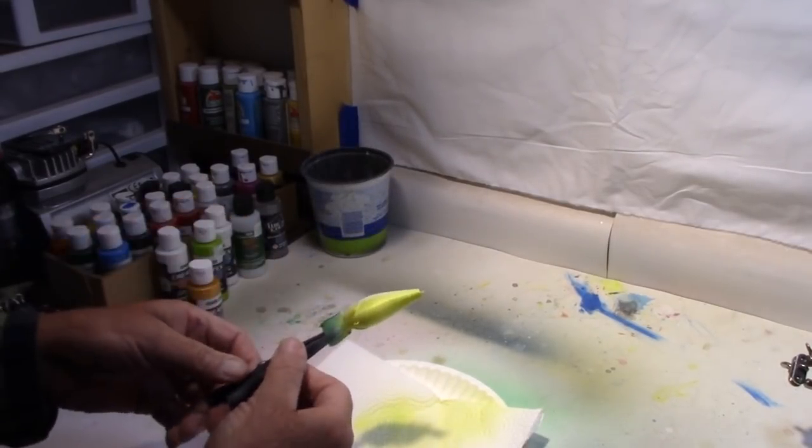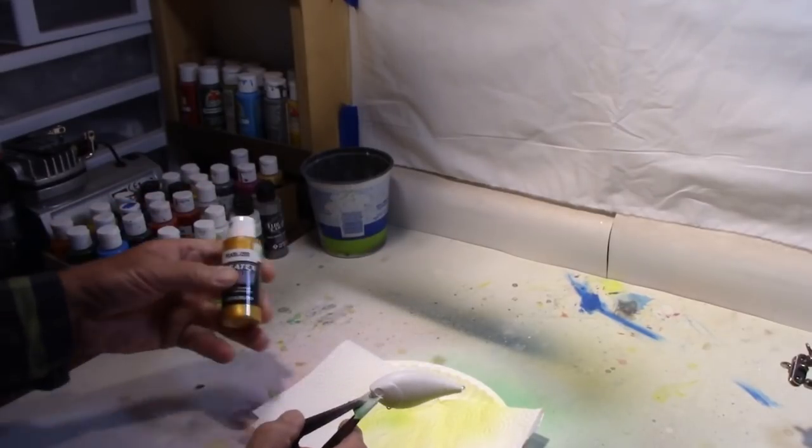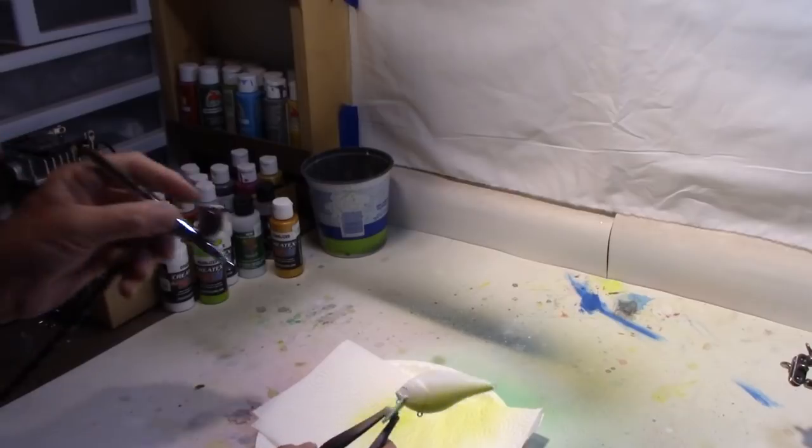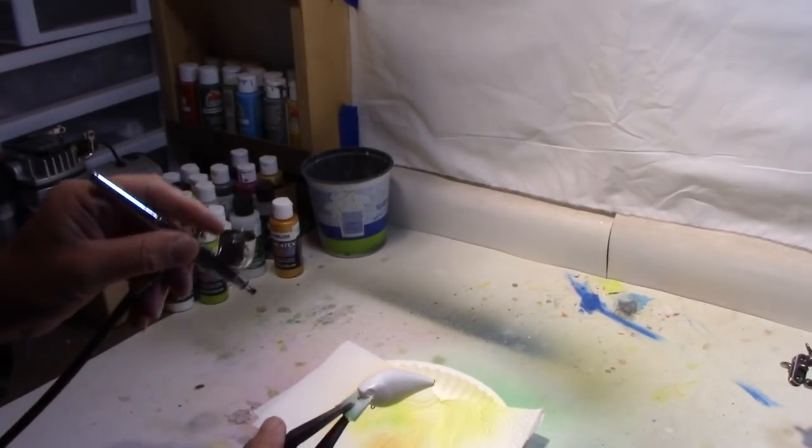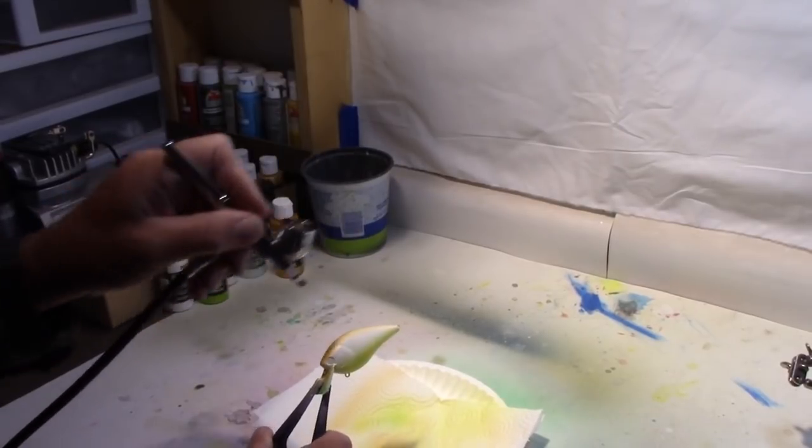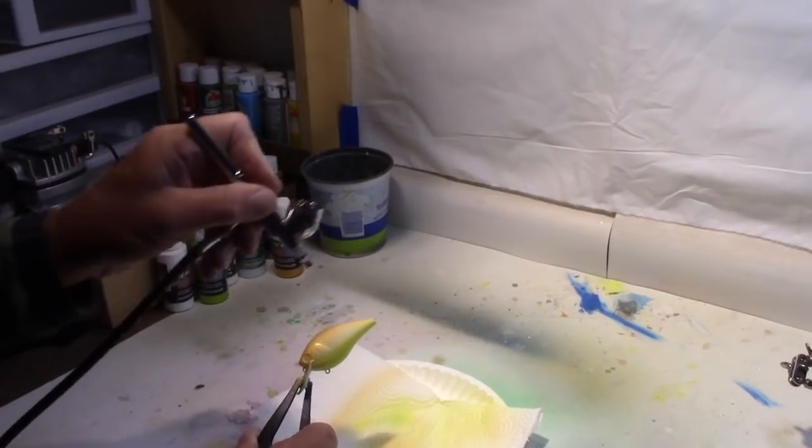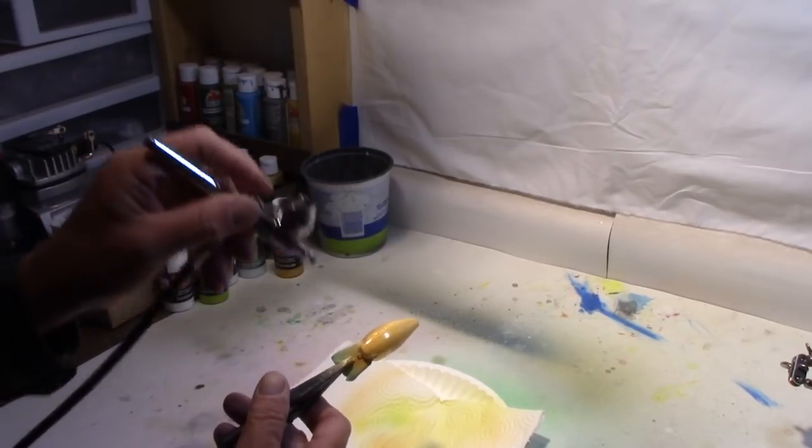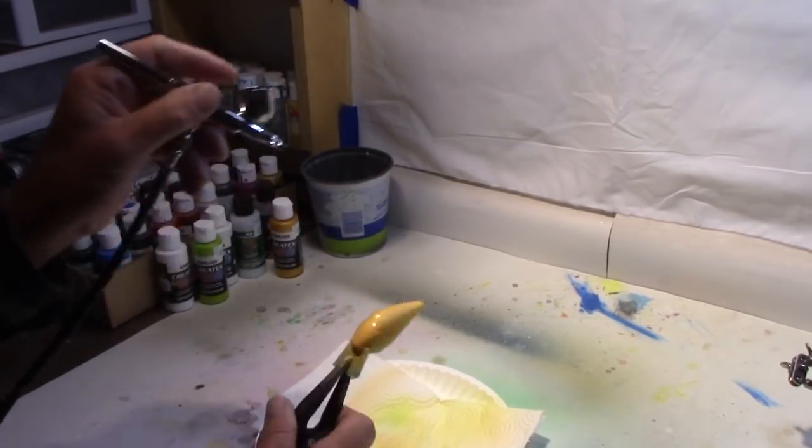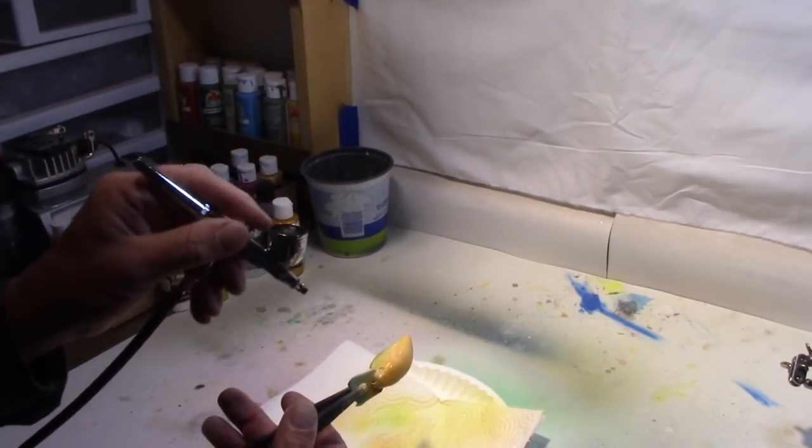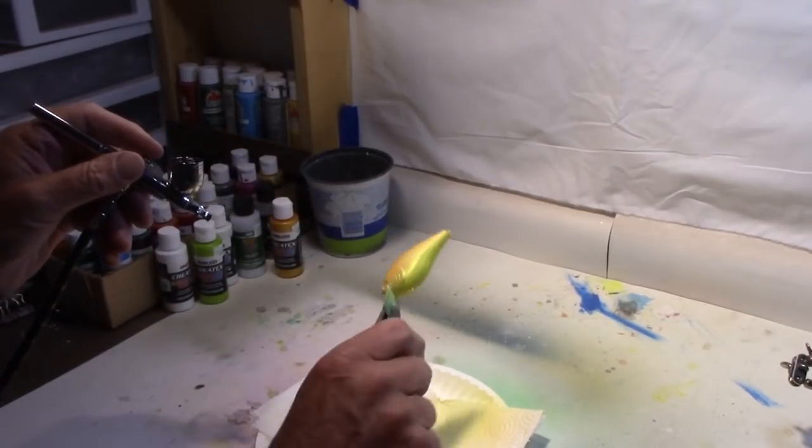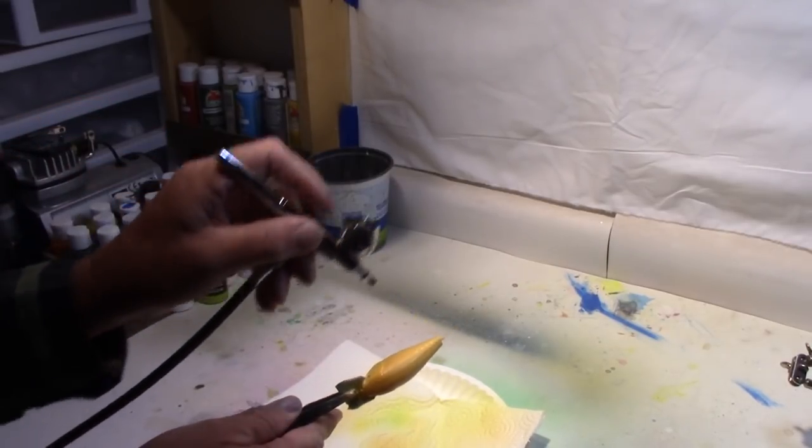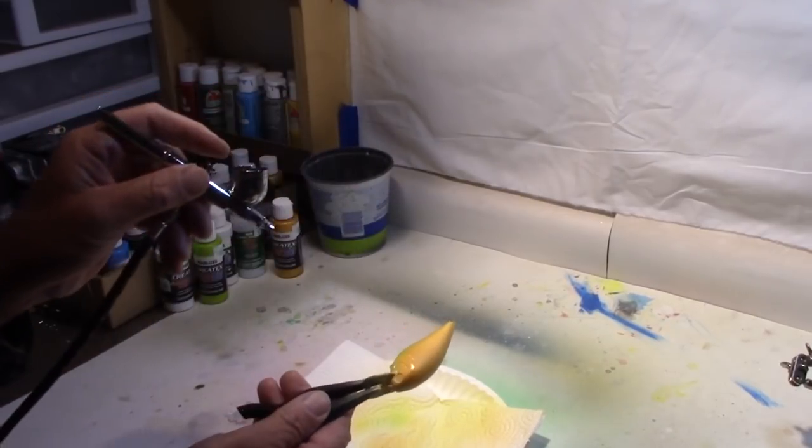Now we have our pearlized lime for the belly. So now for the top color, we're going to stay pearlized with the Createx. This time we're going to go with a pearl copper. So we're going to put a copper down the top. Again, a good coat. We're kind of shooting down the sides so we can kind of maybe taper that down a little into the green on the belly. Get down a little bit farther, I think. Yeah, that's not too bad. Come a little more down the side. Over that green a little bit. There we go.